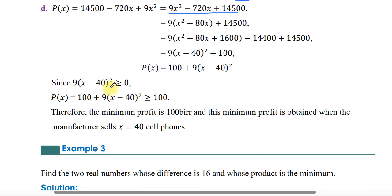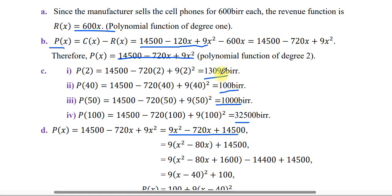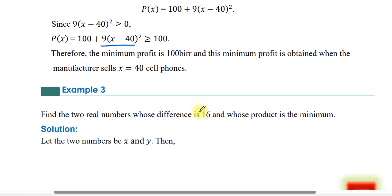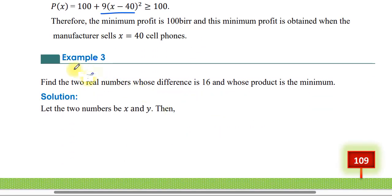Since 9(X minus 40) squared is always greater than or equal to zero, P(X) = 100 + 9(X minus 40) squared is always greater than or equal to 100. Therefore the minimum profit is 100, and this minimum profit is obtained when the manufacturer sells X = 40 cell phones.